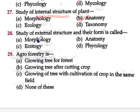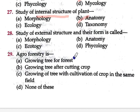Question number 28: Study of external structure and their form is called — option A morphology, option B anatomy, option C ecology, option D phycology. When we study the outer structure — how it looks externally, its color, its shape — that is morphology. When we look at a plant from outside, we see its stem, leaves, branches — that is the morphology of plant. So option A, morphology, is correct.